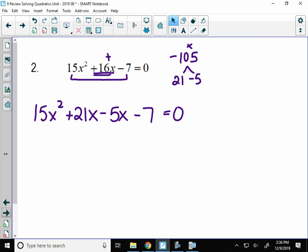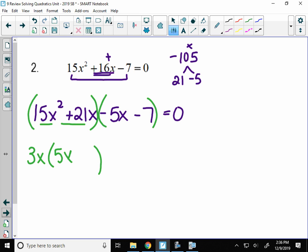Now from here, I'm going to group. I pull the first two terms into a group, and the last two terms into a group. The first group has a GCF of 3x, so I pull that out in front. And when I divide 3x out of both of these terms, I get 5x plus 7.